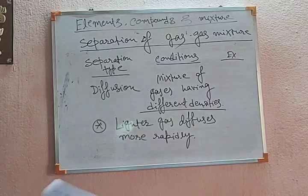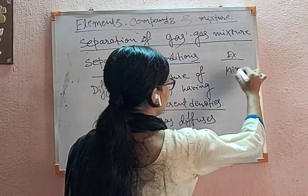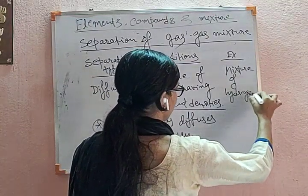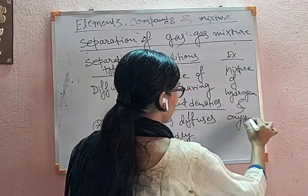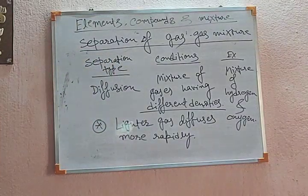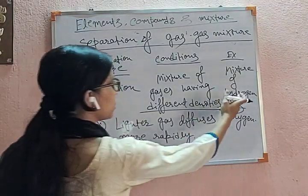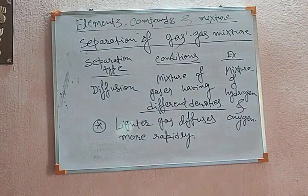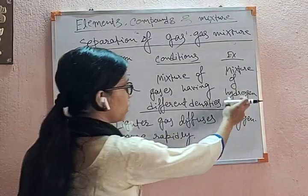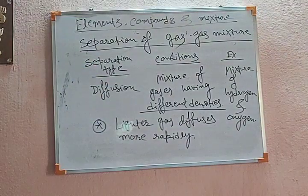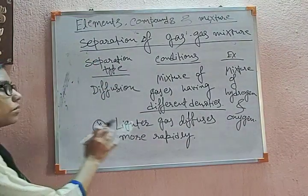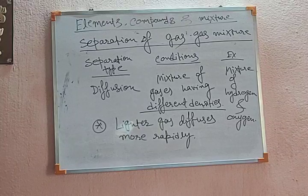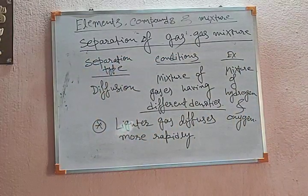For example, a mixture of hydrogen and oxygen. Hydrogen is lighter than oxygen, so when we apply the diffusion method to separate hydrogen and oxygen, hydrogen diffuses faster and separates from the mixture. So hydrogen diffuses first and undergoes separation from oxygen.